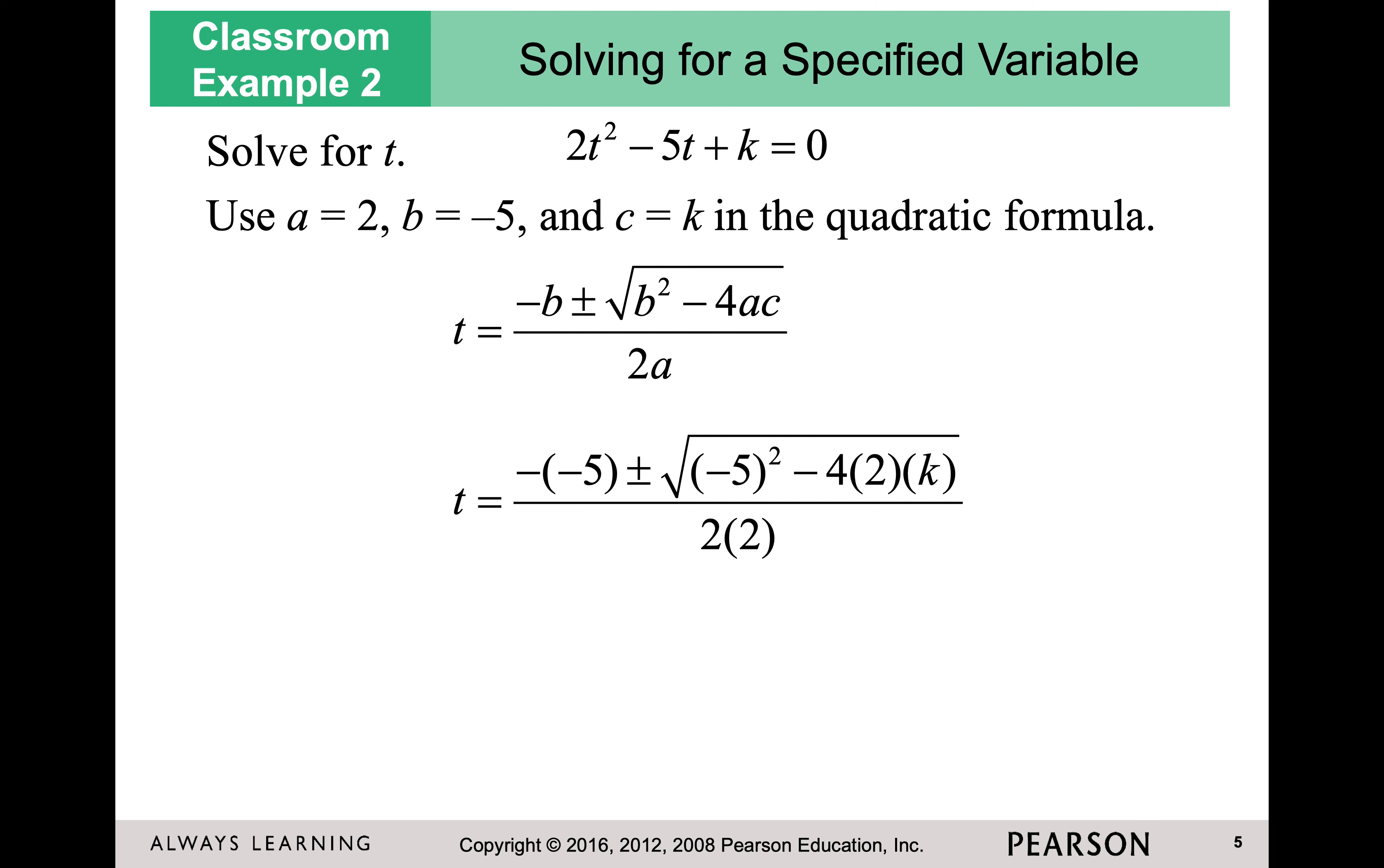The negative of negative five is positive five, five squared minus four times two times k would be 25 minus eight k, all over four. I cannot take the square root of 25 because it's 25 minus something. So that is as simple as that answer gets. Now in the lab, if you don't enter the plus or minus, it's going to mark it wrong. So make sure you're double checking that you have two solutions when you enter it into the lab.